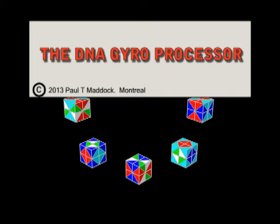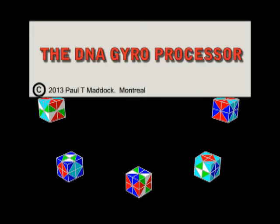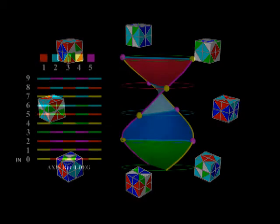Hi, this is Paul again. Now I've got something else to show you. I made another important discovery when I was doing some more research on this 9-band system, and I've decided to call it the DNA gyroprocessor. Okay, so let's show you what I've got.